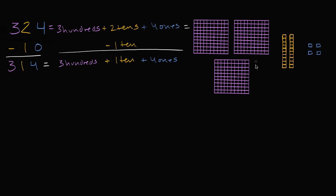So I'm left with three hundred fourteen — three hundreds plus one ten plus four ones. And if you look at it over here, we had three hundred and twenty-four and then we take away one of the tens, and we are left with three hundred, one ten, and four ones, or three hundred and fourteen.